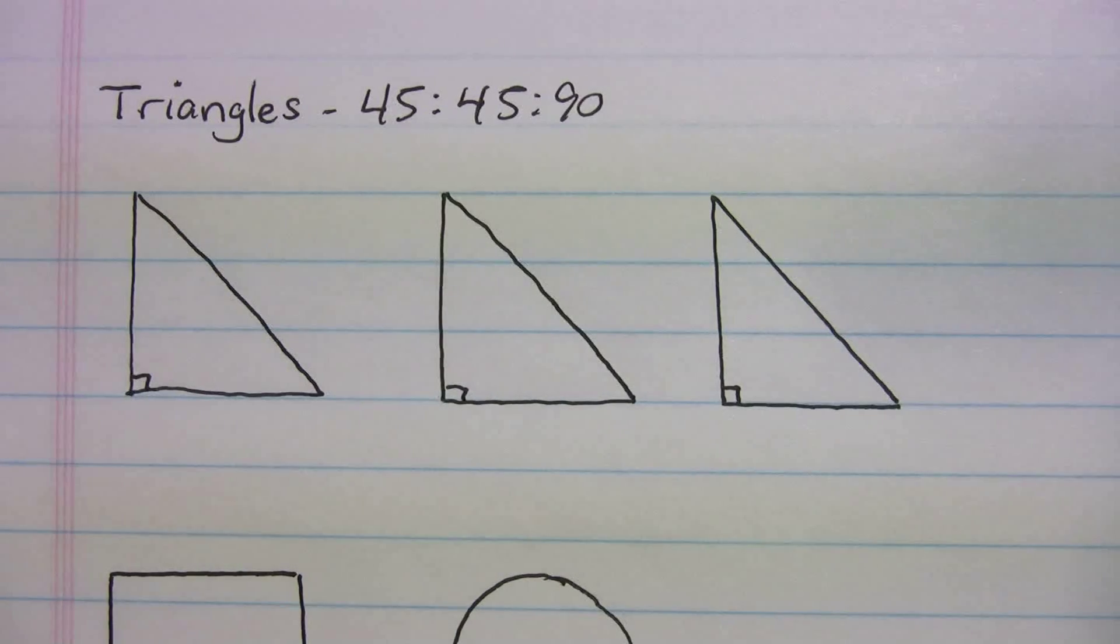All right, welcome to the special right triangles lesson. In this lesson we're going to be going over how to solve for the 45-45-90 triangle. And before we get into that, before we try and solve the sides, we've got to figure out, come test day, how do I know I have a 45-45-90? So the test maker can give you these triangles in a number of different ways.